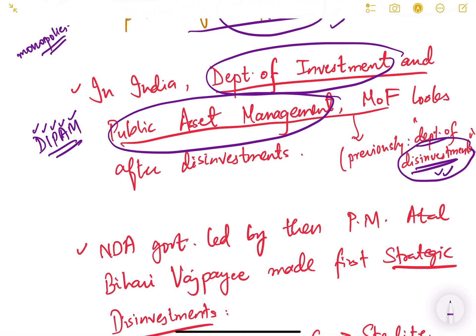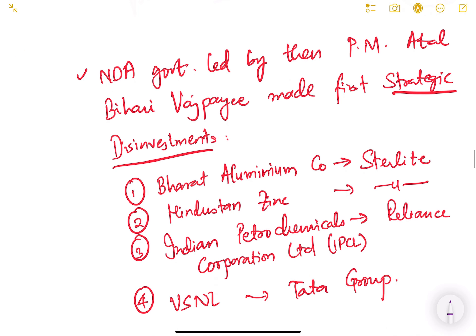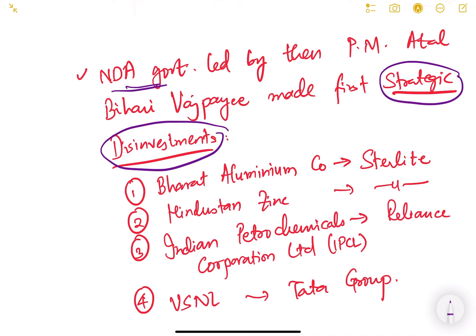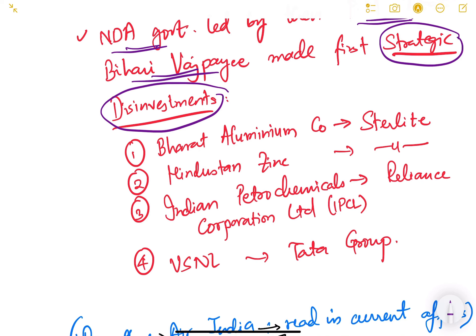Who looks after disinvestment in India? It is the Department of Investment and Public Asset Management, known as DIPAM. It comes under the Ministry of Finance. Previously it was known as the Department of Disinvestment — only the name changed, the work remains the same.